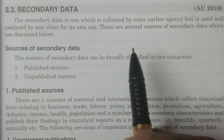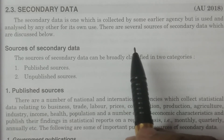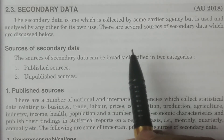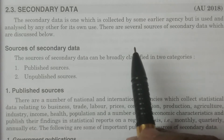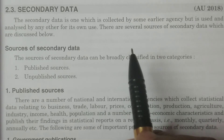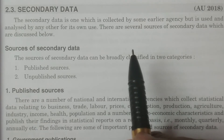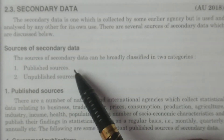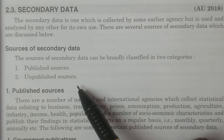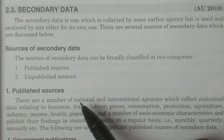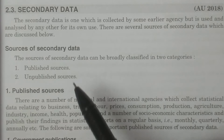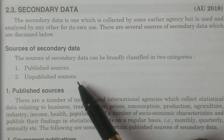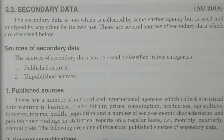If the collected data was used by any organization or another individual for their own purpose, that is called secondary data. There are several sources — published sources and unpublished sources — these are the two important sources of secondary data. First, we discuss published sources.